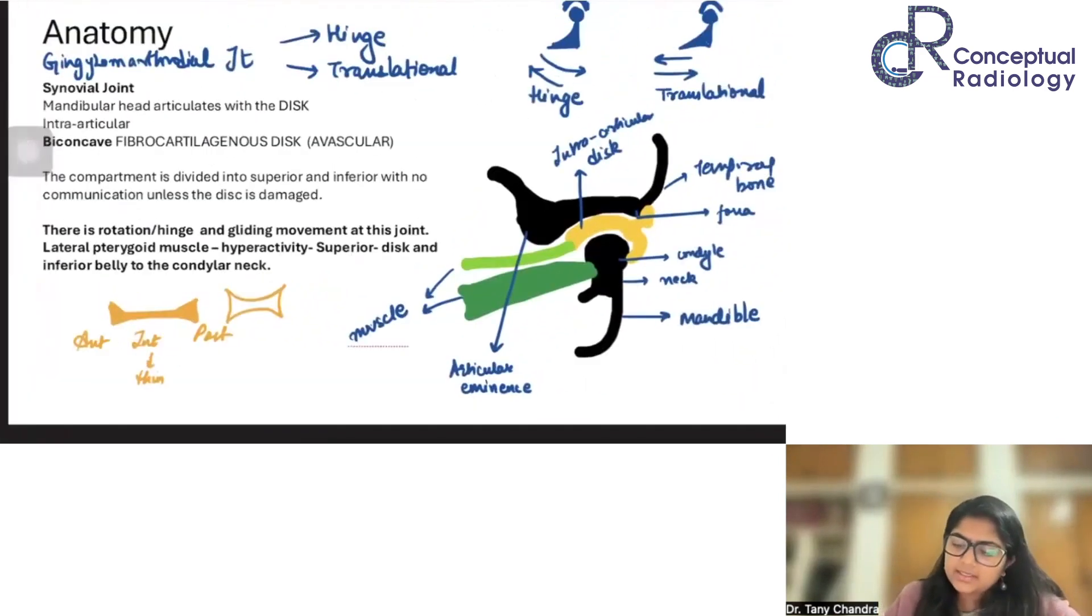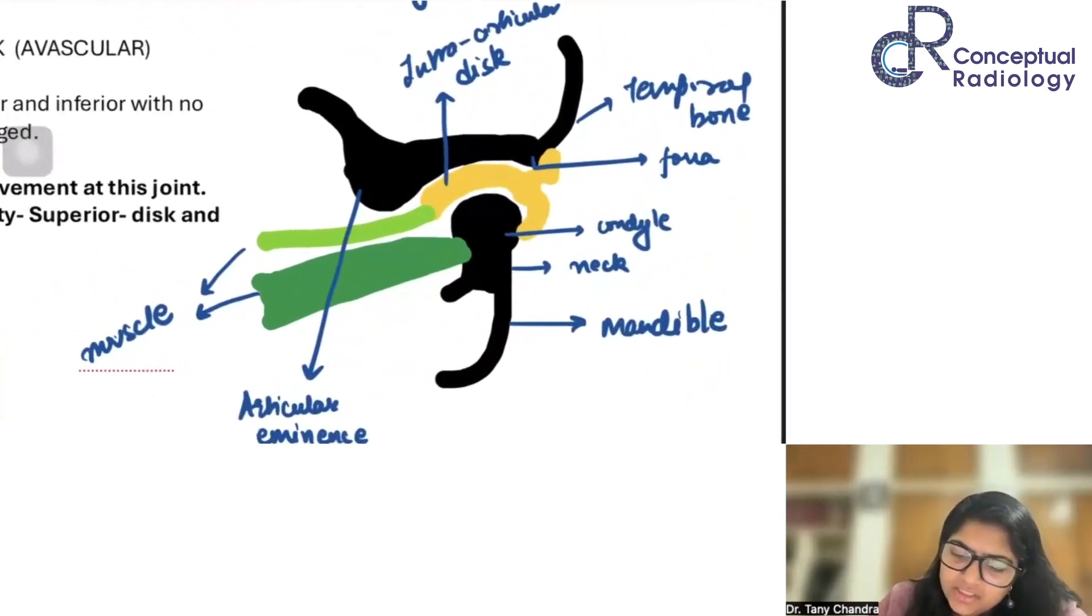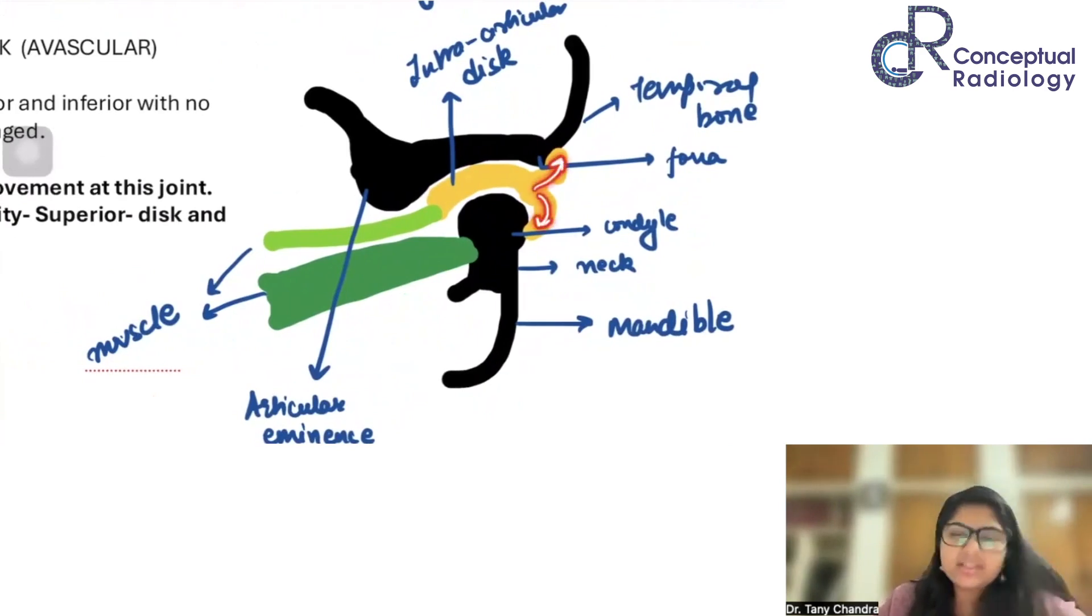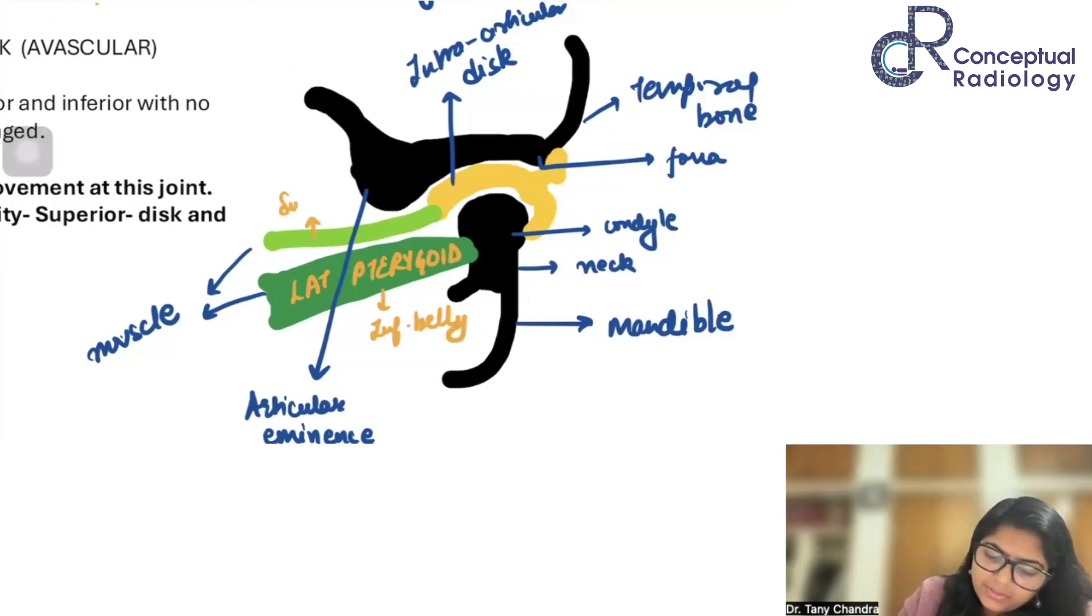We must remember that there are some posterior attachments which will connect it to the joints respectively. This disc also needs stabilization. Posteriorly, it is going to get attached to the bones. And anteriorly, it is going to get attached by some dynamic stabilizers, which are like the muscles. Here, this is the lateral pterygoid muscle. And this will be the inferior belly. And this is going to be the superior belly.